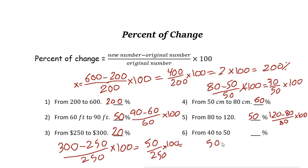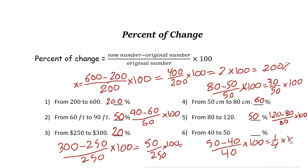40 to 50. 50 is the new number. 50 minus 40 over the original number 40, then multiply by 100. 50 minus 40 is 10. 10 over 40 is one fourth. One fourth times 100 is 25. So it is 25 percent.